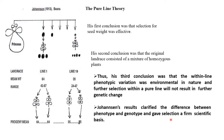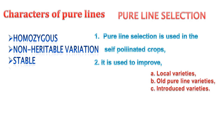The characteristics of pure line are: it is homozygous, non-heritable variation will be seen, and they are stable. Pure line selection is used in self-pollinated crops and is used to improve local variety, old pure line variety, and to introduce a new variety.